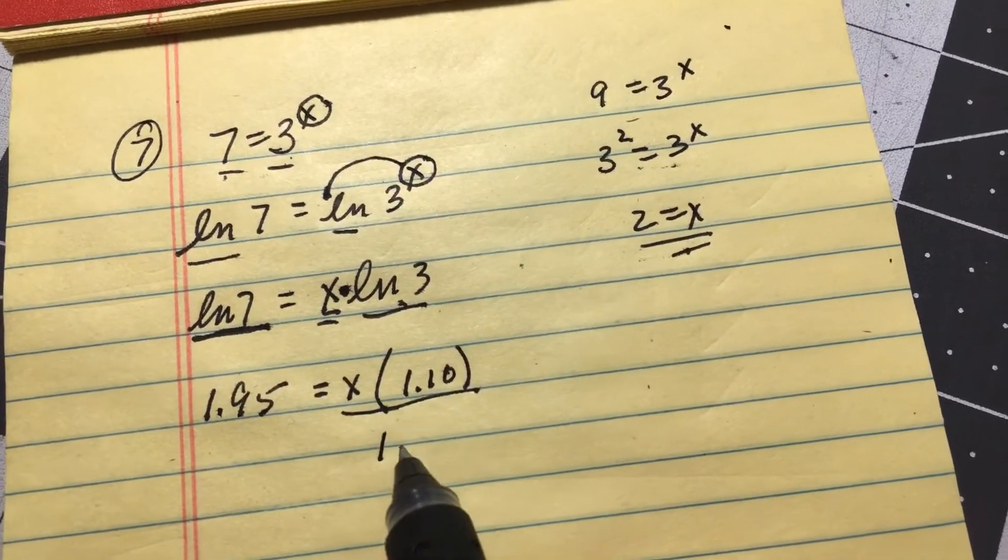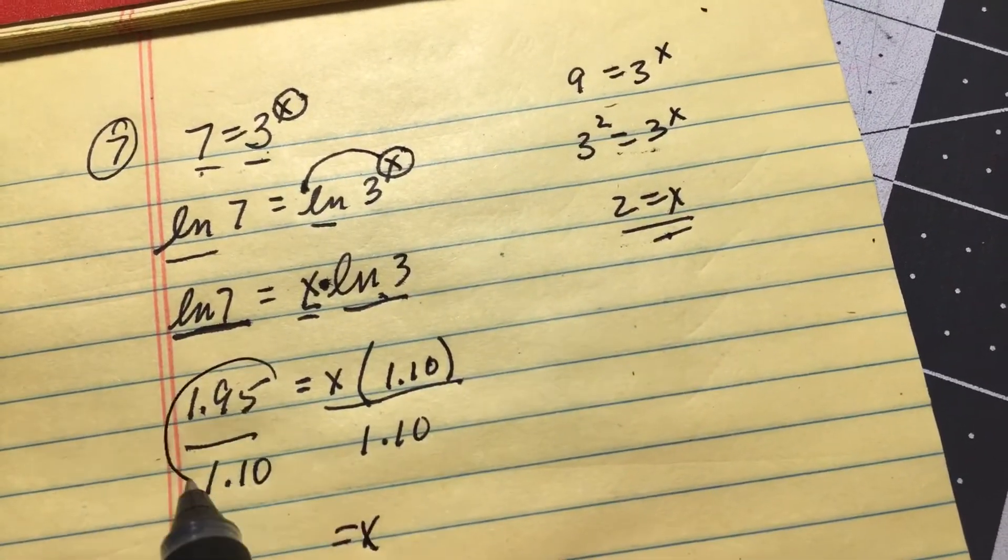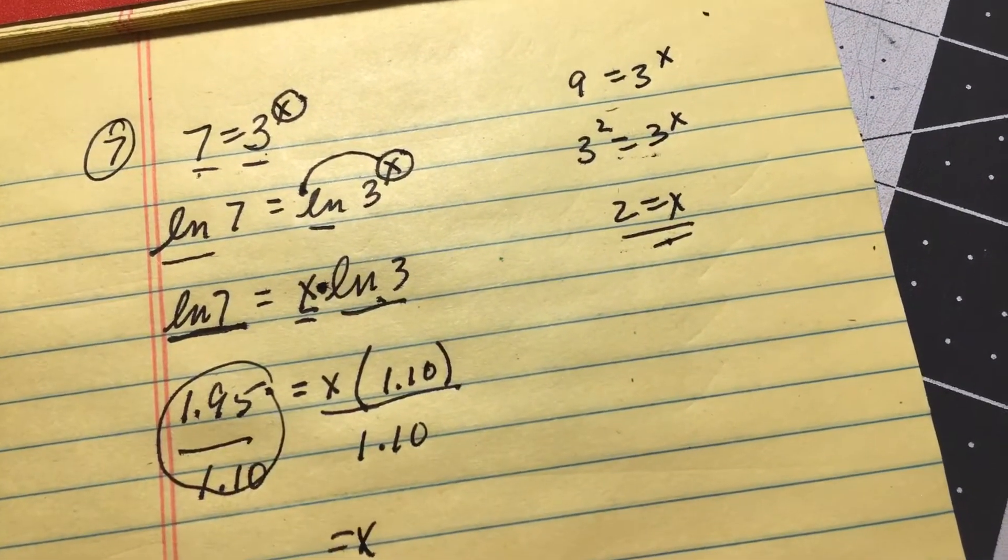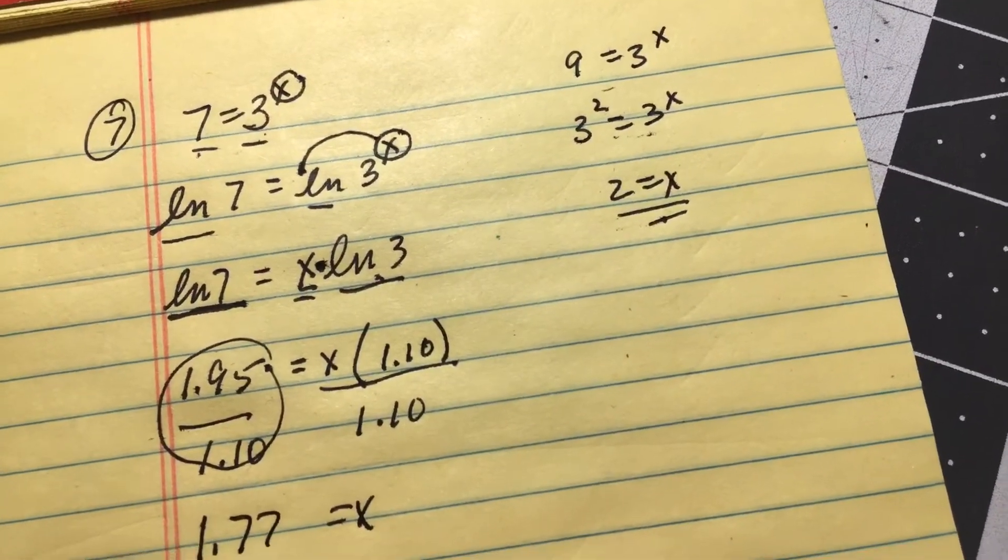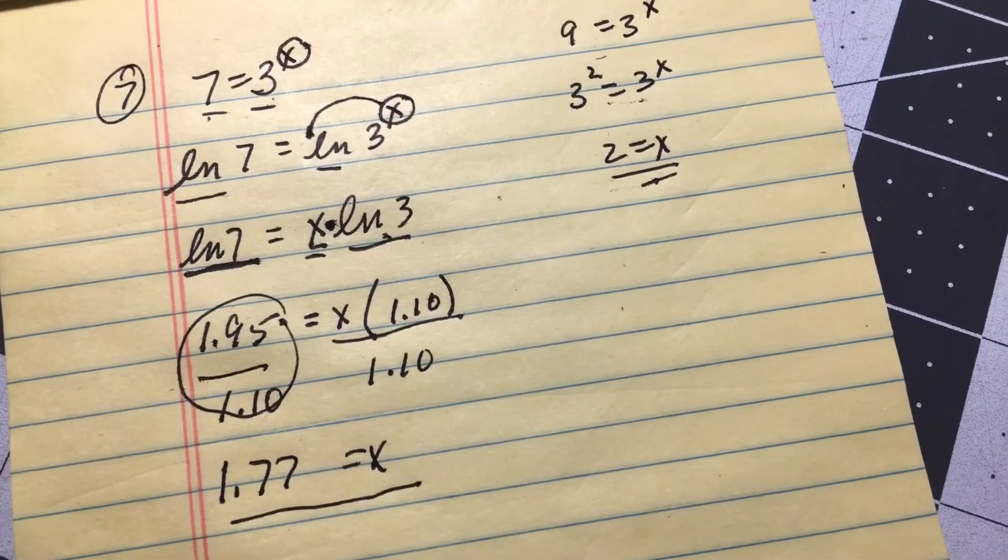I'm gonna get rid of this 1.10, so I divide by 1.10, and 1.95 divided by 1.10 is 1.77. Okay, let me know if this helps.